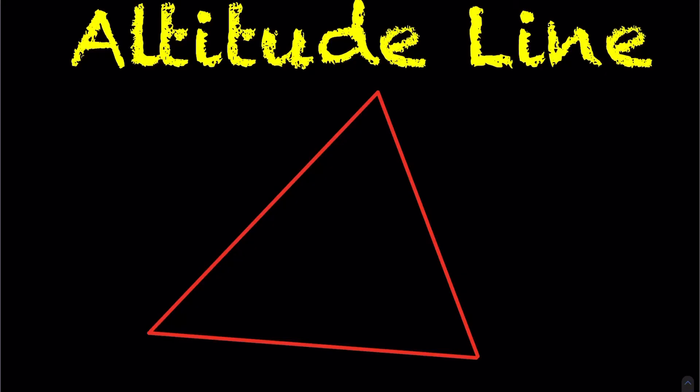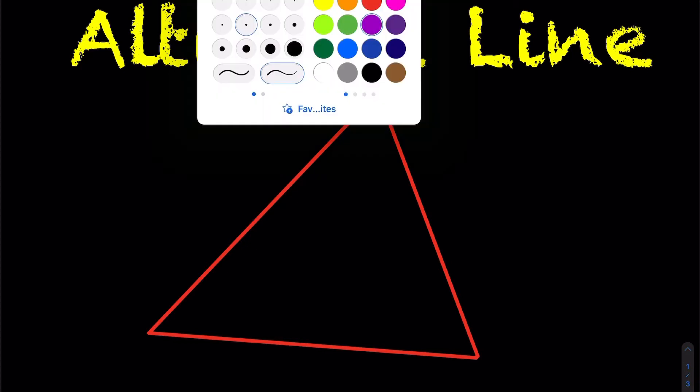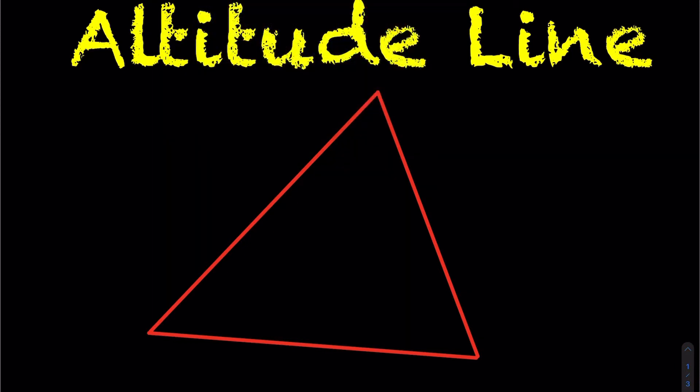Okay, we're going to define the altitude line here of a triangle. So the altitude line of a triangle, every triangle has three different altitude lines.